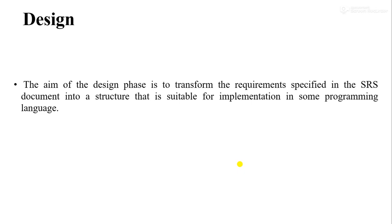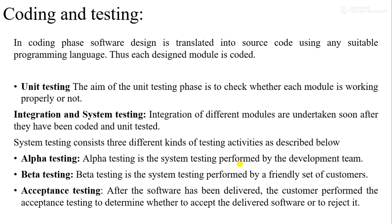After design, we perform coding and unit testing. In any software development firm, a large software may be divided among different modules and assigned to individual teams. Each module is a subset of the program, and each module is coded independently — this is known as coding. Coding is the process of converting the high-level design into source code using some programming language. Unit testing means that after successfully coding each module, we test that particular module. The aim of unit testing is to check whether each module is working properly or not.